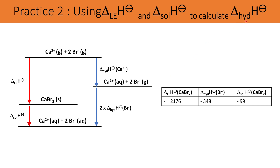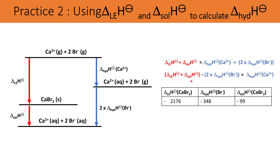We need to find the enthalpy change of hydration of calcium ions. We have the lattice enthalpy of calcium bromide, the enthalpy change of hydration of bromide, and the enthalpy change of solution. Setting up the equation: lattice enthalpy + enthalpy change of solution = enthalpy change of hydration of calcium + 2 × enthalpy change of hydration of bromide. Rearranging and substituting gives the enthalpy change of hydration of calcium ions as −1579 kJ mol⁻¹.